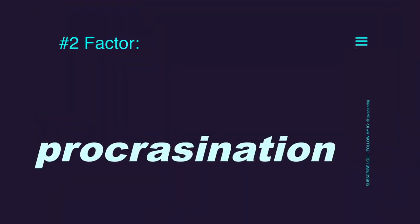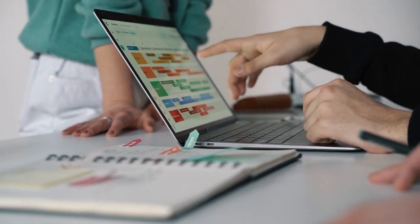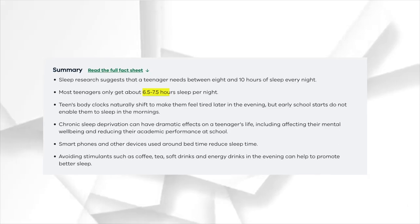The second factor is procrastination — basically doing your work last minute. For the average student, let's say they have a science exam the next day. Instead of studying, they scroll for hours. Until later that day they realize they have to study, and they study until it's already 3am. The average student only gets about 6 hours of sleep every night, mainly due to poor time management and procrastination.